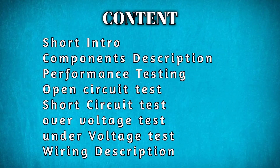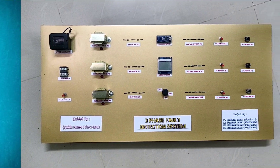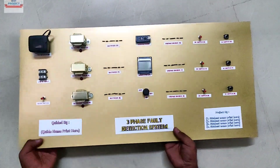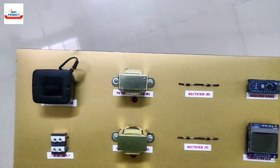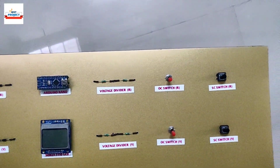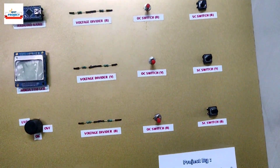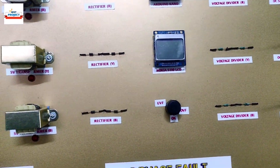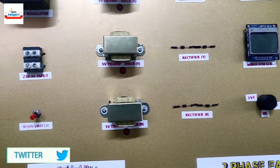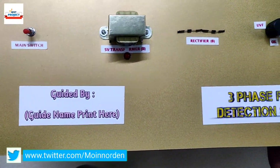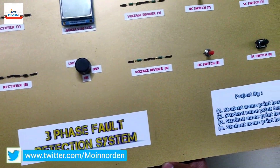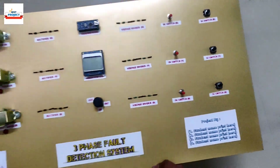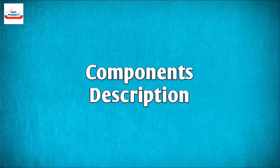Hello dear friends, welcome to our YouTube channel Best Project. We will cover all these topics in this video. In power transmission lines, there are many faults that occur which are necessary to understand, like line-to-ground fault, line-to-line fault, open circuit fault, short circuit fault, etc. For the reliability of the system, to fulfill this purpose, we made this prototype of the system as shown on the screen. Let us discuss components used in this project.